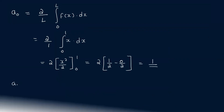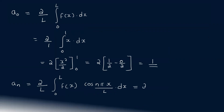Now for aₙ, using the theorem: aₙ equals 2 by L times the integral from 0 to L of f of x into cos n pi x by L dx. With L equal to 1, this becomes 2 times the integral from 0 to 1 of x into cos n pi x dx.